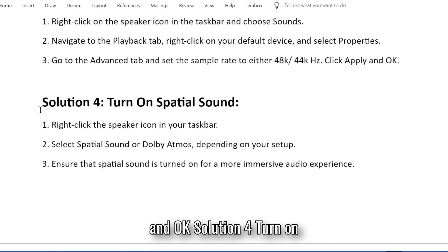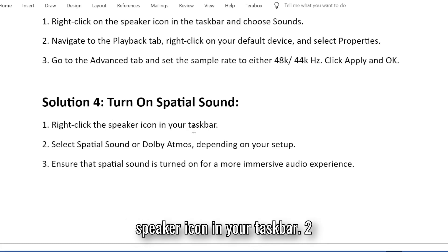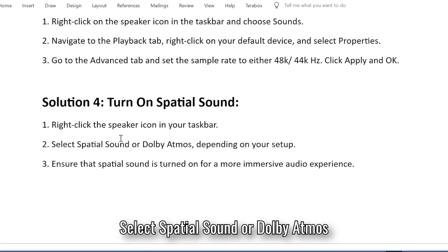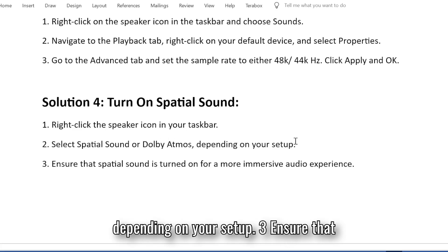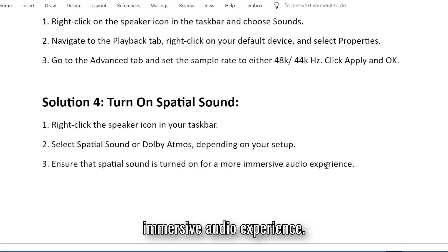Solution 4: Turn on spatial sound. Right-click the speaker icon in your taskbar and select spatial sound or Dolby Atmos, depending on your setup. Ensure that spatial sound is turned on for a more immersive audio experience.